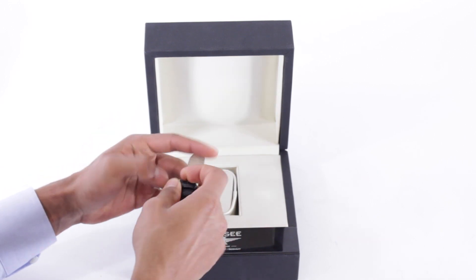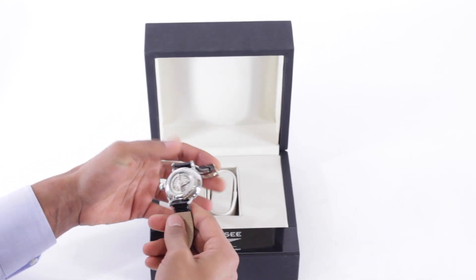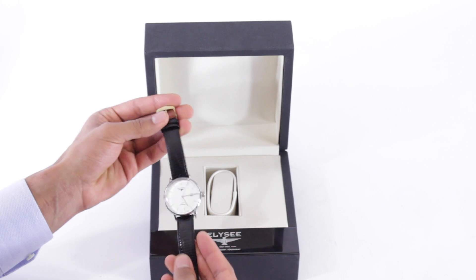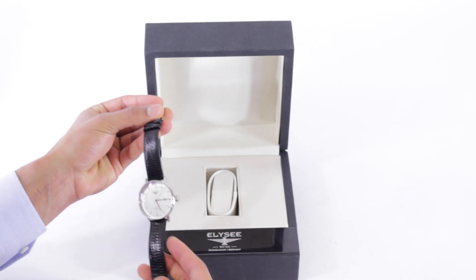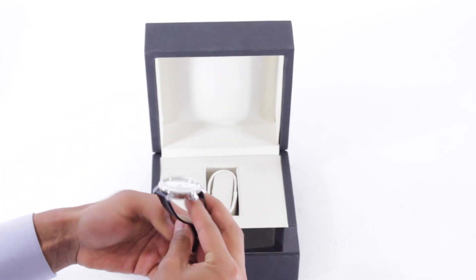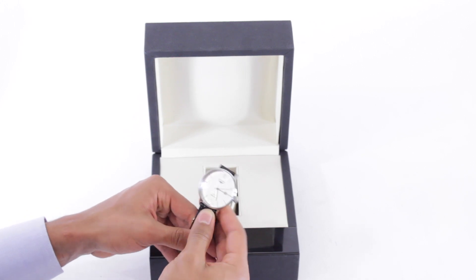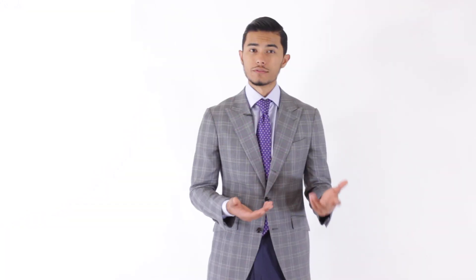You know, the higher-end Seikos usually are rolling around $500, $600, and so are Bulovas. To think that you can get such a nice handmade watch, an automatic one on top of that, for just around $500, that's an amazing deal. So I wanted to review them to see if it just wasn't another cheap automatic watch.